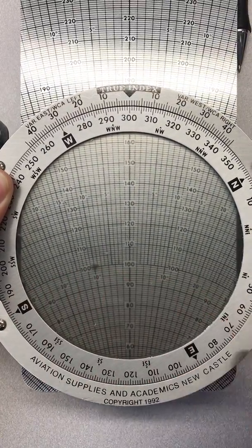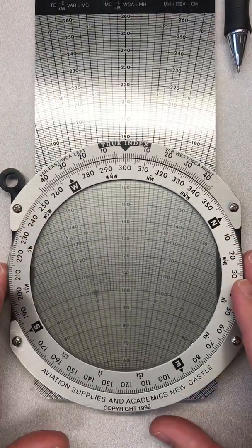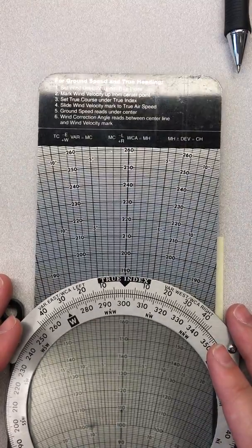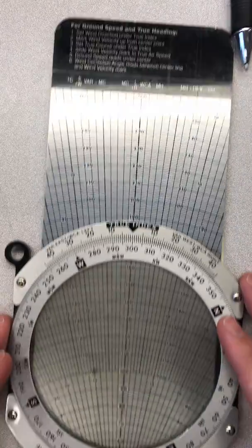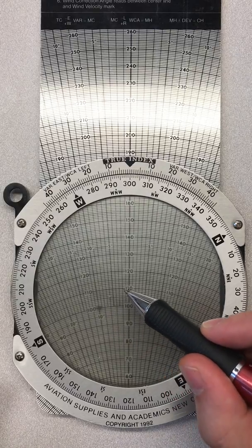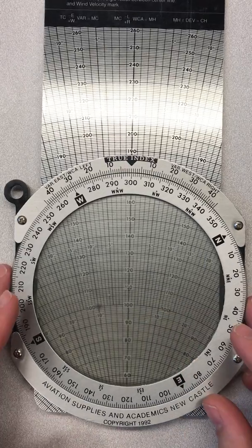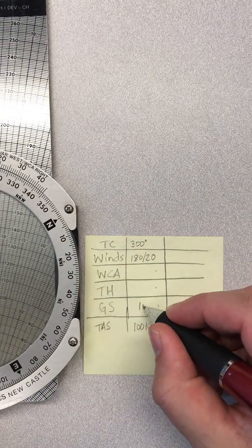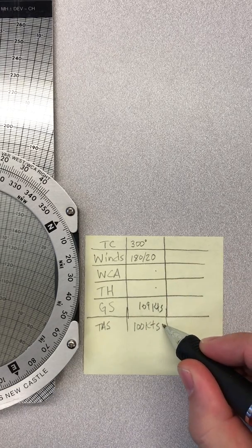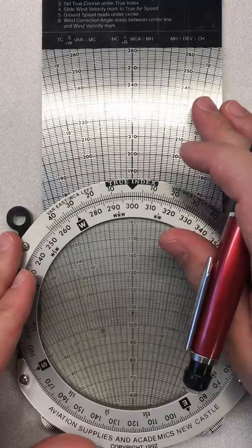After that step, after step four, the dot should be left and it should be right along that 100 knot true airspeed mark, and we're finished manipulating this. All we're left to do is to interpret what's shown to us according to the directions. So step five tells us ground speed reads under center. Remember that's the hole in the middle. With it set properly, the hole in our middle is about right here, so ground speed is about 109 knots. We can make a note of that. True airspeed is 100, we have a little bit of a tailwind here, our ground speed's 109 knots.